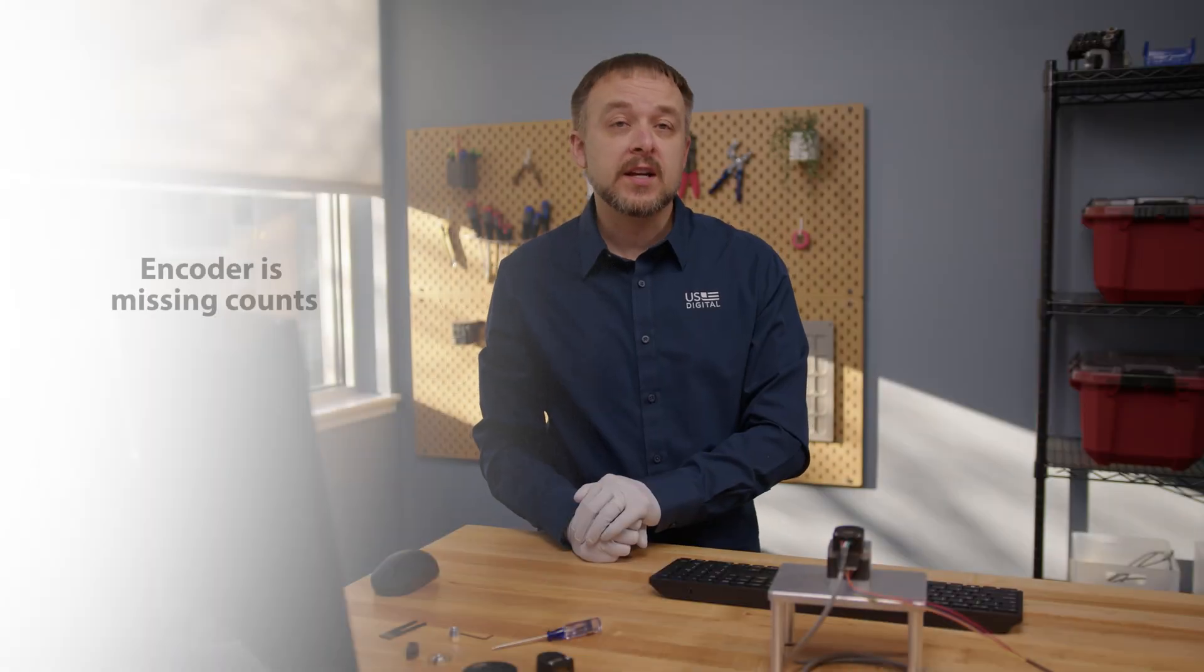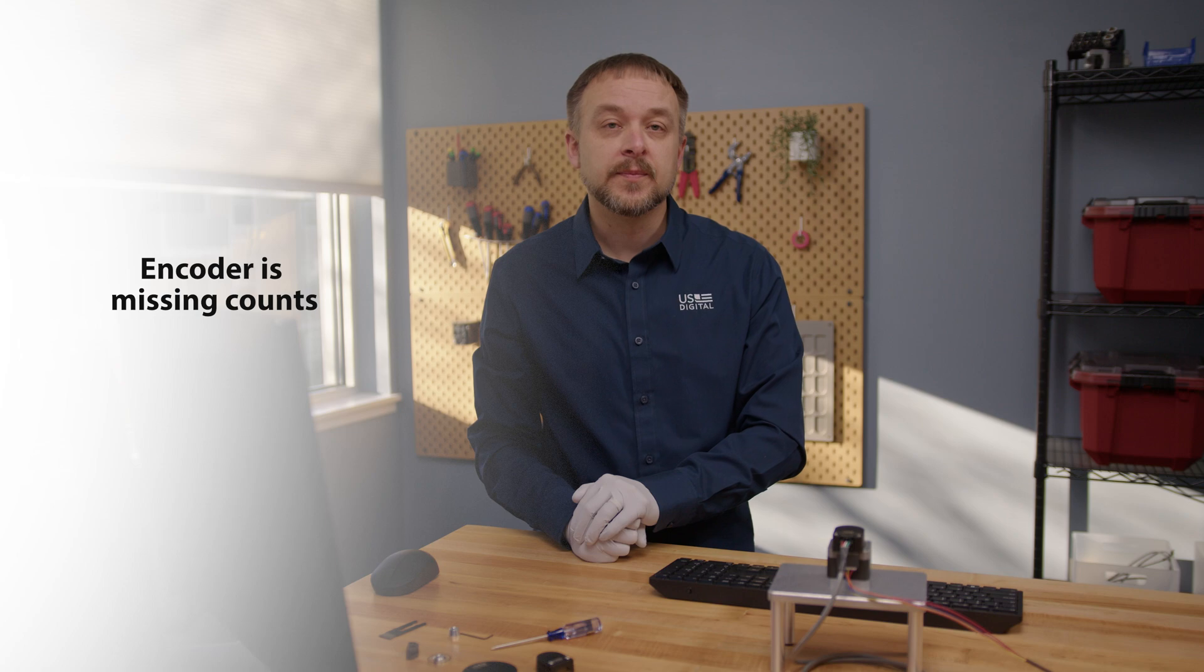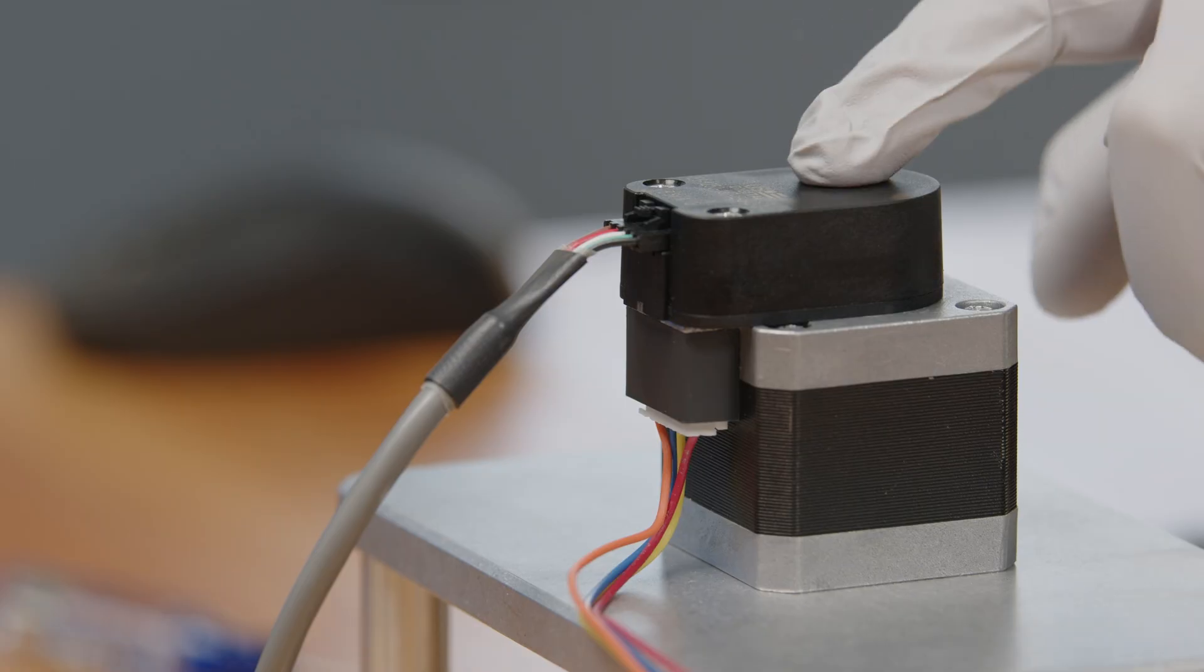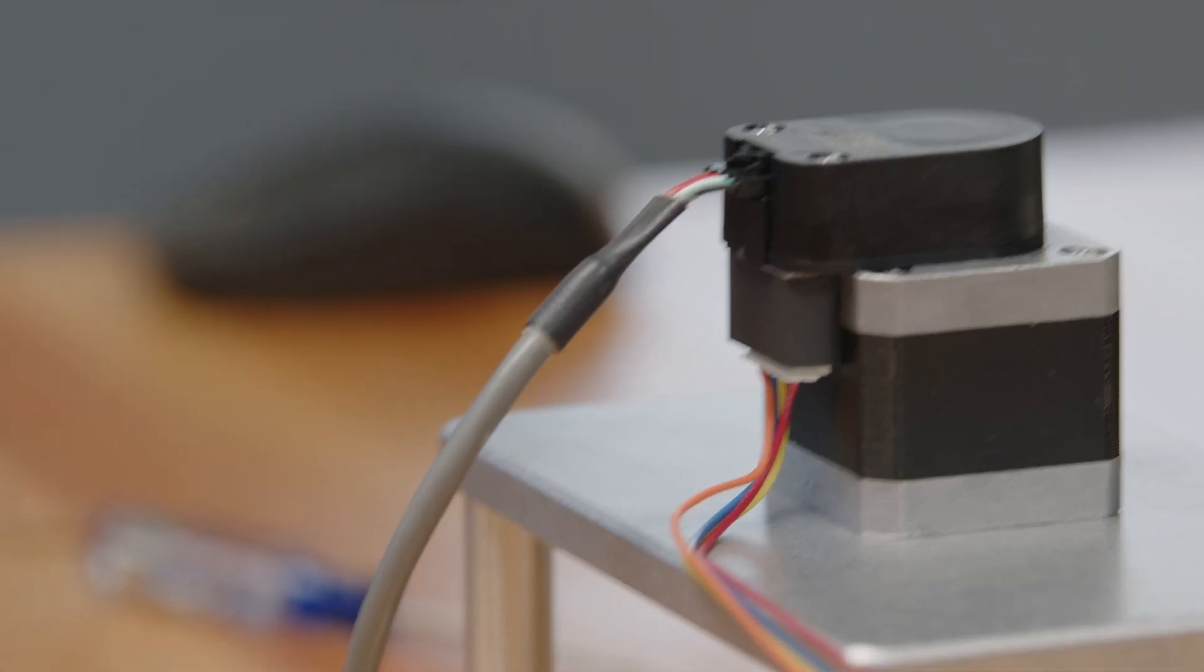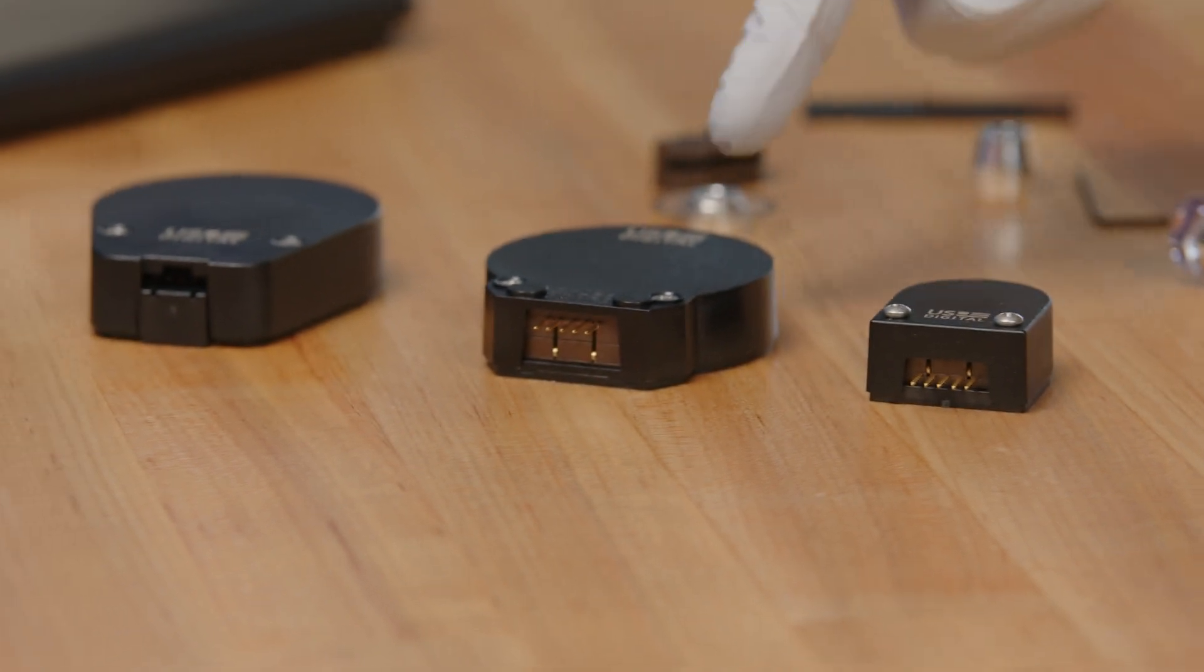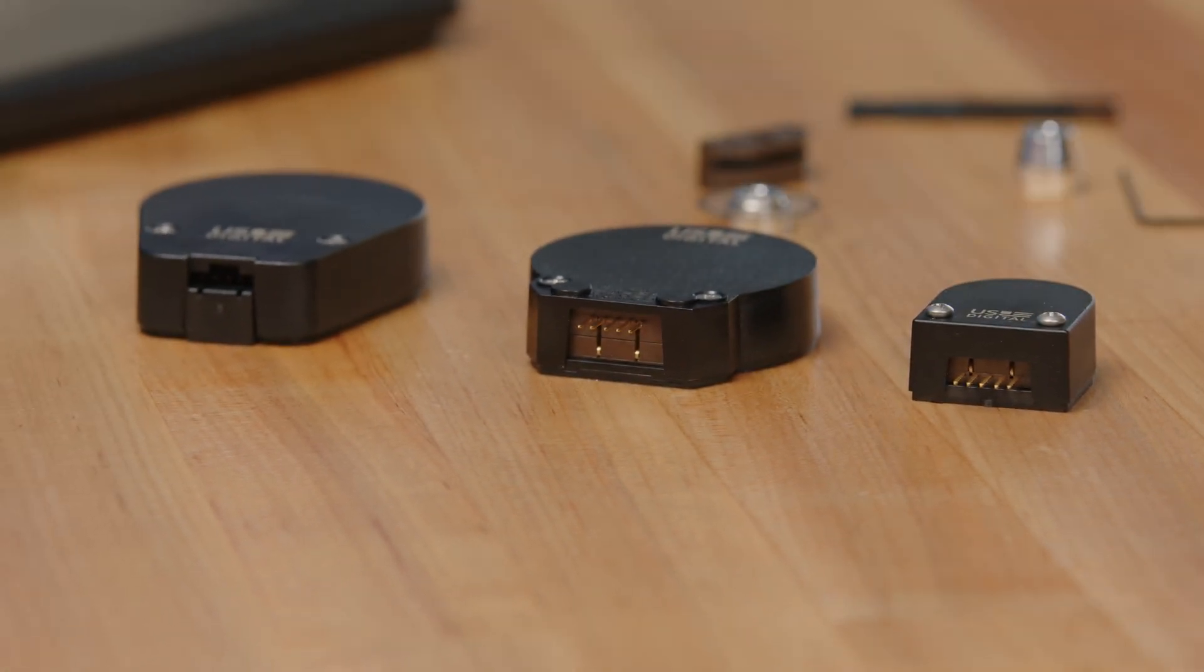Today we're going over a few things to check if your encoder is missing counts. We're using the E5 for demonstration purposes, but these tips would hold true for the E2, E3, and E6 encoders as well. Let's get started.